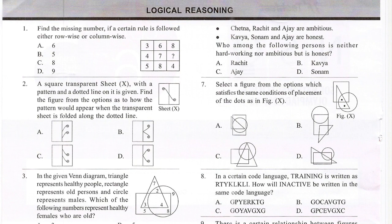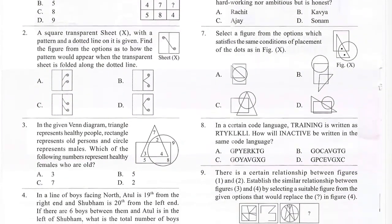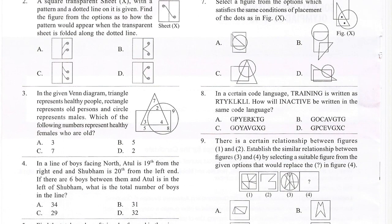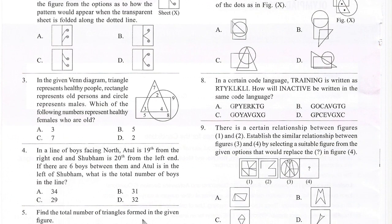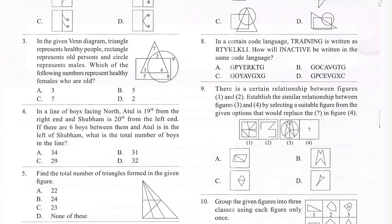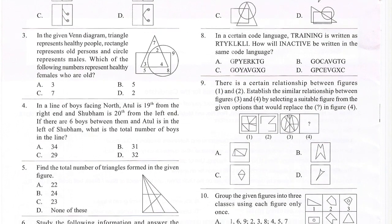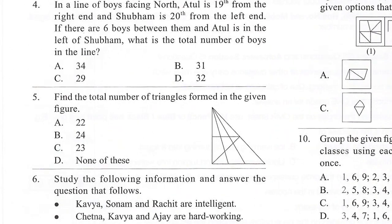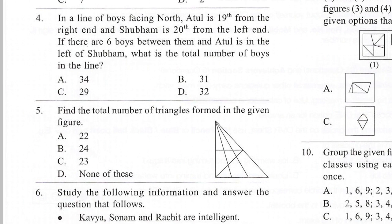Question 3: In the Venn diagram, triangle represents healthy people, rectangle represents old persons, and circle represents male. Which of the following numbers represents healthy females who are old? Question 4: In a line of boys facing north, Atul is 19th from the right end, Shubham is 20th from the left end. If there are six boys between them and Atul is to the left of Shubham, what is the total number of boys in the line?